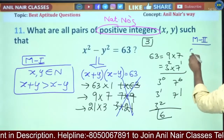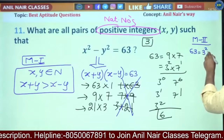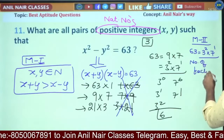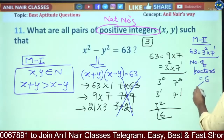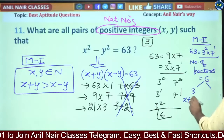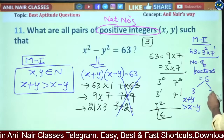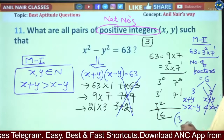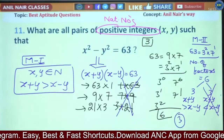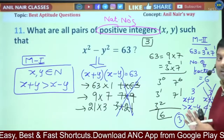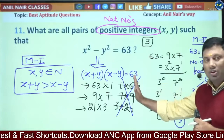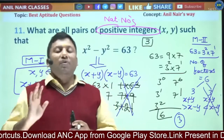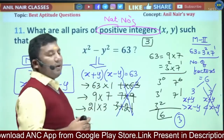Method 2: 63 = 3² × 7¹, so total number of factors = 3×2 = 6 cases. Half the cases (3) will have x+y greater than x-y, and the other 3 will have x+y less than x-y. Since the sum of two natural numbers can never be less than their difference, those 3 are eliminated. The answer is 3 pairs.